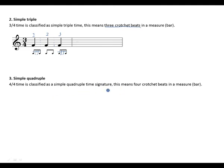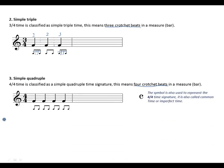Simple quadruple — four-four time is classified as a simple quadruple time signature. This means four crotchet beats in a bar. Let's take a look at examples: we're expecting to find four beats in a bar — beat one, beat two, imaginary bar line, beat three, imaginary bar line, and beat four. You can divide this into four notes or two if you want — make them semiquavers or leave them as crotchets.